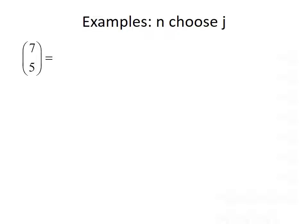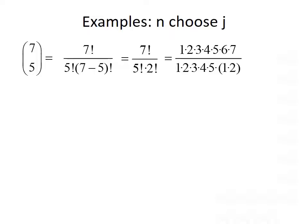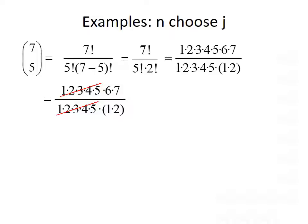Let's look at a couple of examples evaluating n choose j. Starting with 7 choose 5: plugging 7 in for n and 5 in for j, we get 7 factorial divided by 5 factorial times 2 factorial. Expanding the factorials and canceling the common factors 1 through 5 in the numerator and denominator leaves us with 6 times 7 divided by 1 times 2, which is 42 divided by 2, giving us 21.